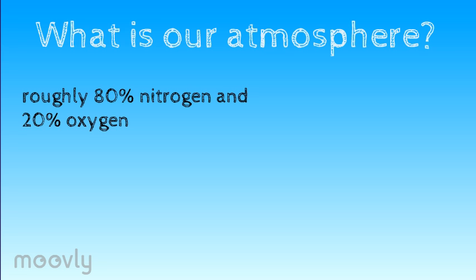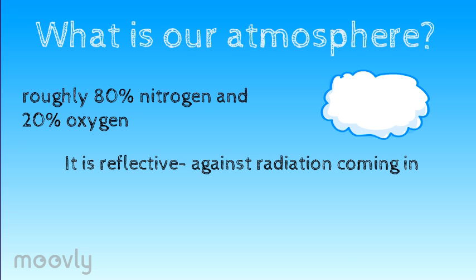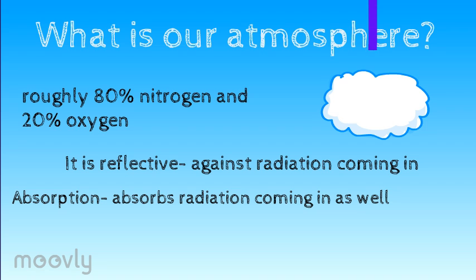The main gases in our atmosphere are oxygen and nitrogen. However, water vapor and traces of other gases are present. The layer of gases above Earth's surface reflects 35% of incoming solar radiation back to space. Clouds reflect 24%, and the Earth's surface reflects 4%. About 17% of incoming solar radiation is absorbed at various levels in the atmosphere.